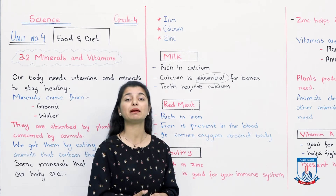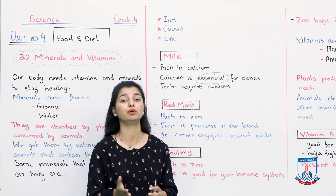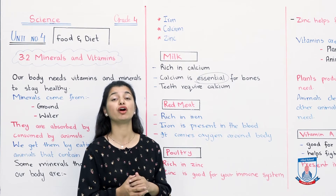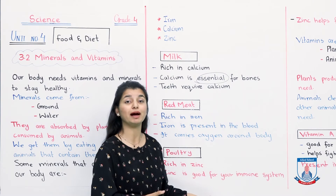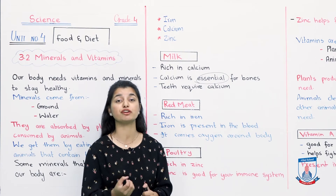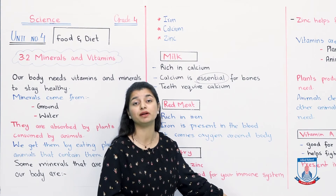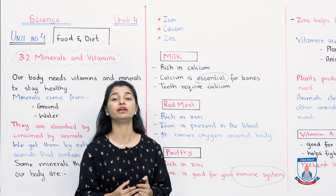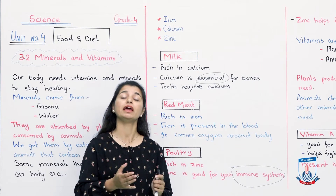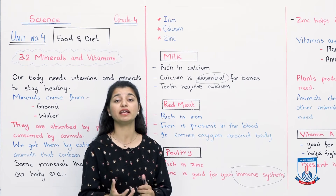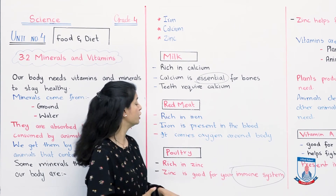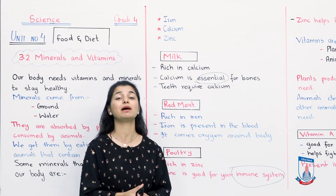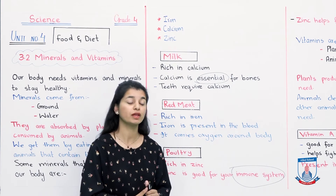Let's look at poultry — mainly chicken and birds kept on a poultry farm. Chicken is a very good example of poultry. Poultry is rich in zinc, which is a mineral. Zinc is good for your immune system. The immune system is our body's ability to fight diseases. If you have enough zinc in your body, your immune system will be stronger and your body will be able to fight illness more easily. That's it for zinc.